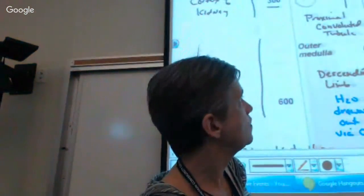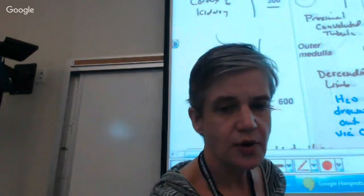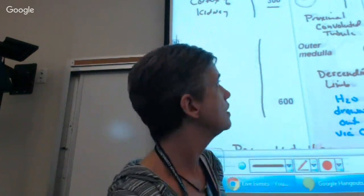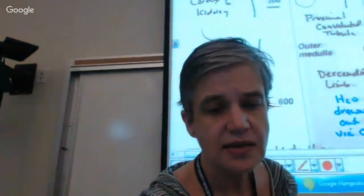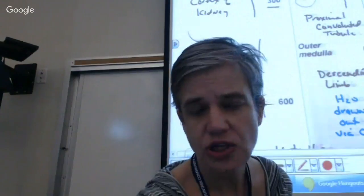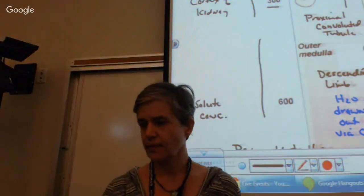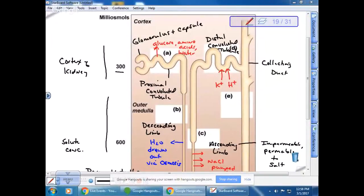In the distal convoluted tubule, secretion occurs — things are moved from the surrounding capillaries back into the filtrate. Substances secreted include potassium and sometimes hydrogen ions. In summary: the proximal convoluted tubule handles the majority of reabsorption; water is reabsorbed in the descending limb; sodium is reabsorbed in the ascending limb; and secretion occurs in the distal convoluted tubule.